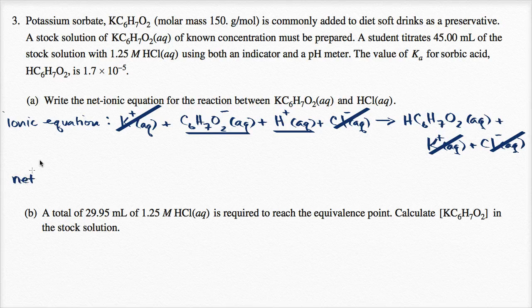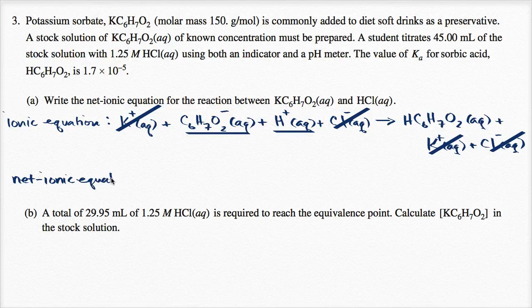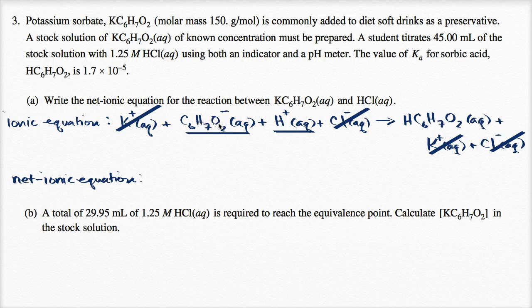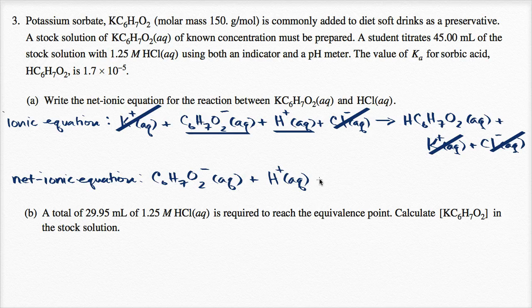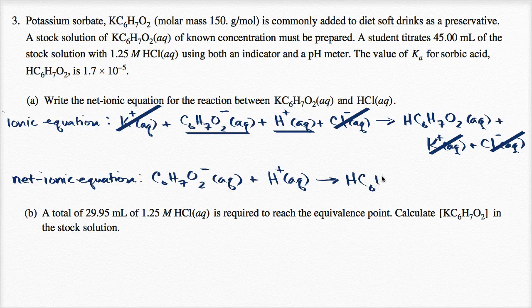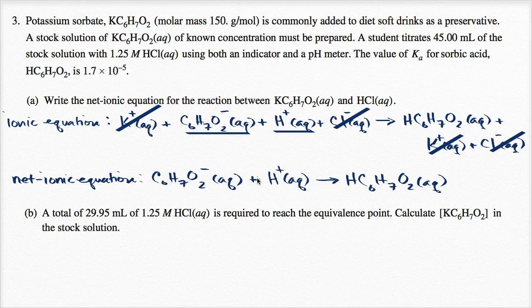So the net ionic equation, net ionic equation is going to be, well, I have my C6H7O2 ion dissolved in an aqueous solution. You combine that with the hydrogen proton dissolved in the aqueous solution, and it's going to give us sorbic acid, HC6H7O2 in our aqueous solution. So there you have it. That is the net ionic equation.